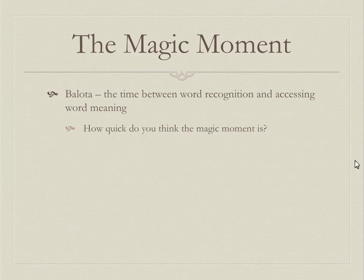Dave Balota at Wash U has called this the 'magic moment' — the time between word recognition and accessing word meaning. There's a spot between recognizing 'cat' and knowing all about cats. How fast do you think that happens? Based on ERP research, it's probably about 200 milliseconds, so it's very, very fast.